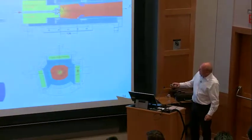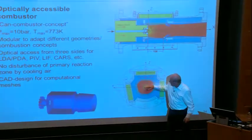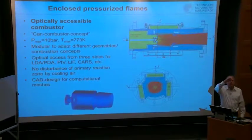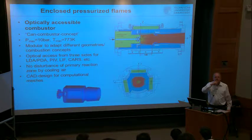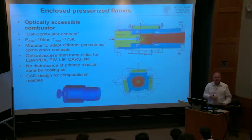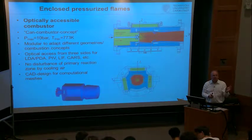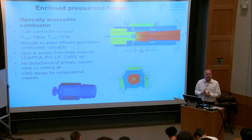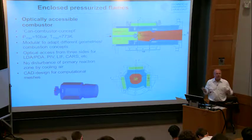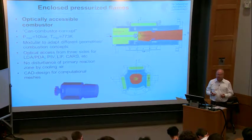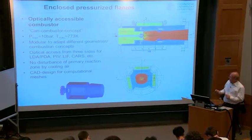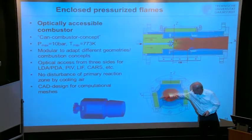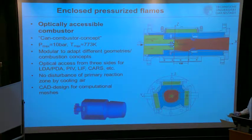Having three optical accesses means you can send the laser in and out and collect fluorescence. Regarding sapphire versus fused silica: birefringence can be a problem depending on polarization. Even with fused silica under mechanical stress you can observe a change in polarization, which can cause trouble for techniques relying on polarization like CARS or polarization spectroscopy. This design was also chosen because we are interested in spray flames, and for phase Doppler anemometry it was better not to have a direct opposing exit.